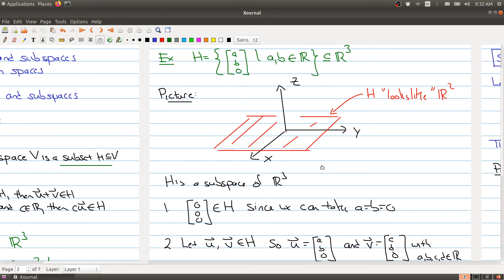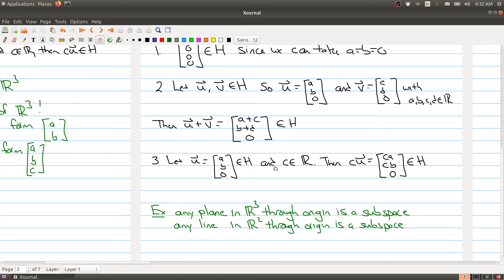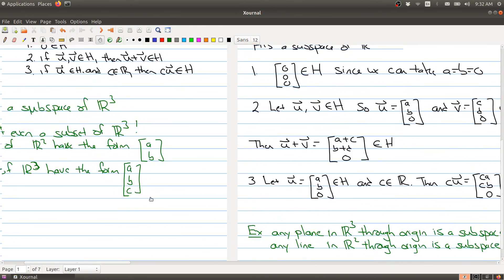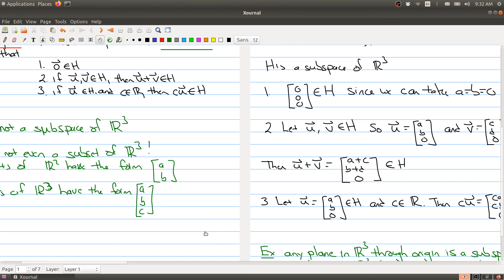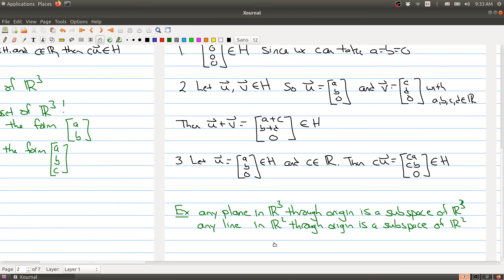So this shows me that H, this red plane here, is a subspace in R3. And in fact, we can say something a little bit more general. Any plane in R3 through the origin is going to be a subspace of R3, and any line in R2 through the origin is a subspace of R2. And it's clear that you need to have the origin on your plane or line, because you need to be able to satisfy the condition that the zero vector is inside of your plane, because you want it to be a subspace. So if you had a plane or a line that did not go through the origin, that would not be considered a subspace.